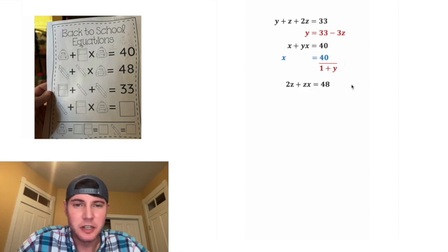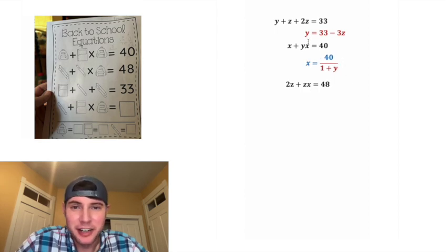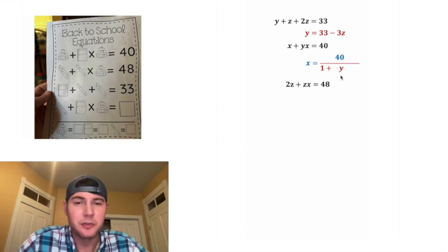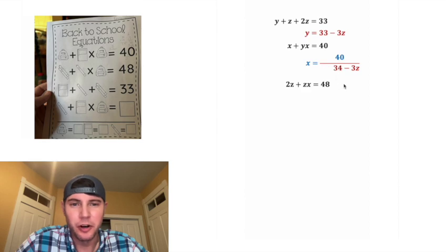Then we can divide both sides by (1 + y) — these cancel each other out — and x just becomes 40 over (1 + y). Now I have y isolated right here, so let's plug in 33 minus 3z for y. Then 1 plus 33 is 34, so x equals 40 over (34 minus 3z). Let's scoot everything over.